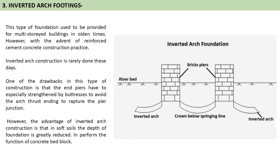Now discussing about the inverted arch — this type of foundation used to be provided for multi-storied buildings in olden times. One of the drawbacks is that the piers have to be especially strengthened by buttresses to avoid the arch thrust tending to rupture the pier junction. However, the advantage is that in soft soils the depth of foundation is greatly reduced. An inverted arch construction is rarely done these days.